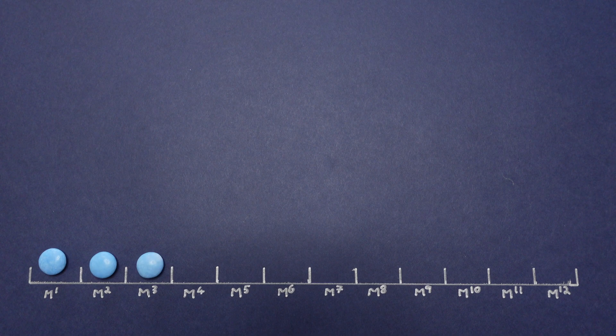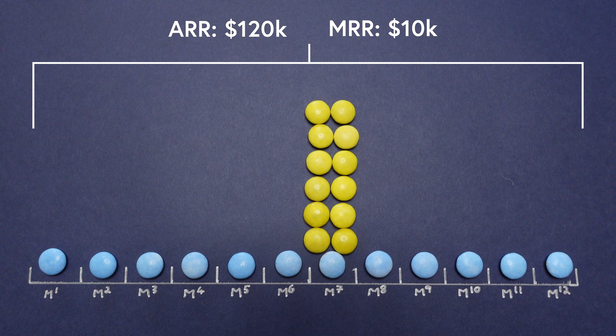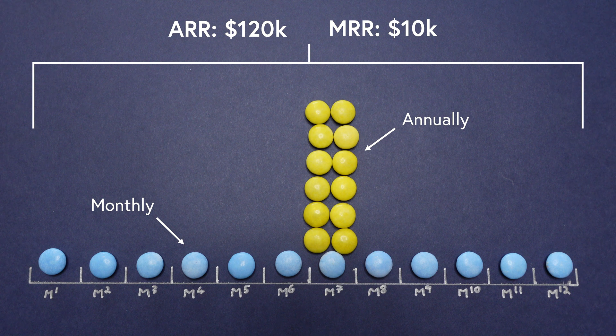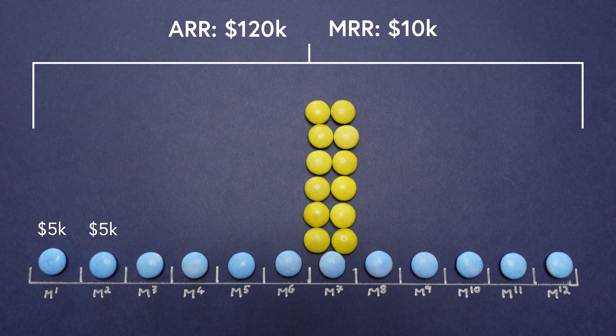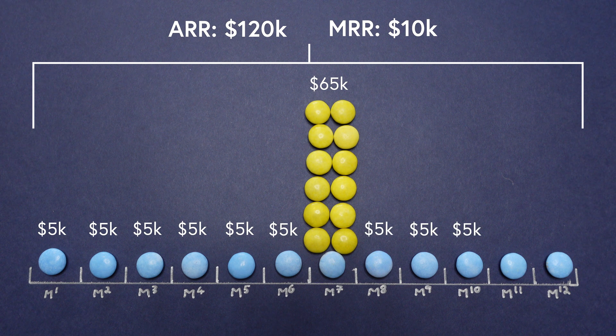We should also remember that MRR doesn't measure cash flow. Sometimes people get confused by the word 'monthly' in Monthly Recurring Revenue — it gives the impression you'll receive a fixed amount each month, but the actual cash you receive depends entirely on your billing cycle. For example, you could have an MRR of $10,000 where half your customers pay monthly and the other half pay annually in July. Your monthly billings would only be $5,000, except in July when they'd be $65,000.